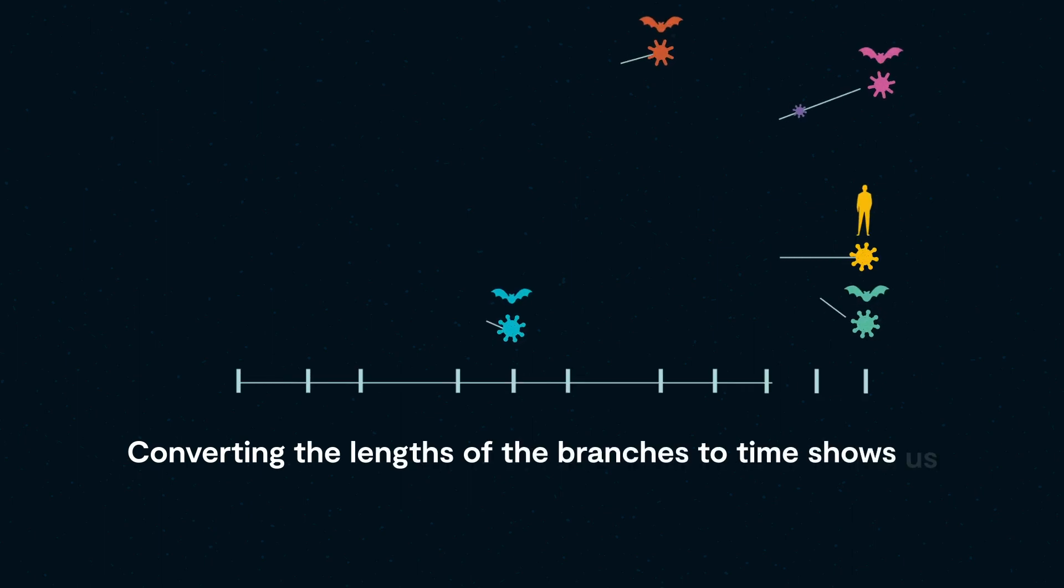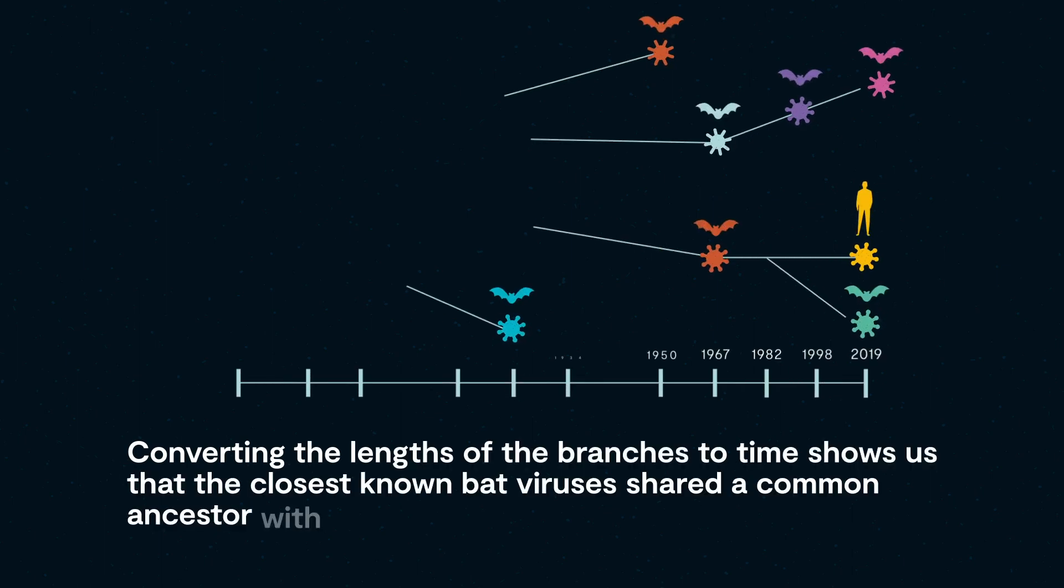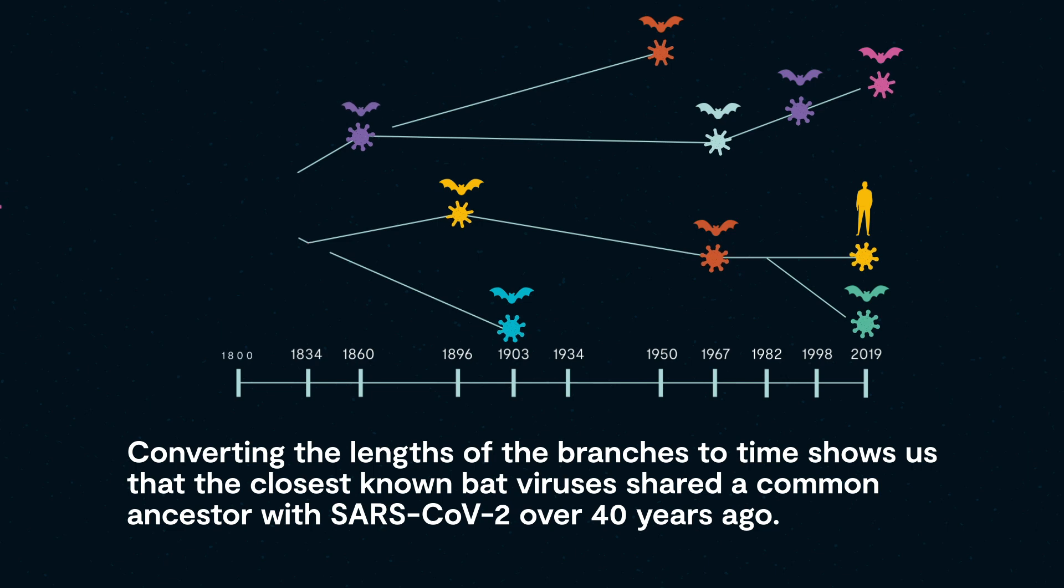Converting the lengths of the branches to time shows us that the closest known bat viruses shared a common ancestor with SARS-CoV-2 over 40 years ago.